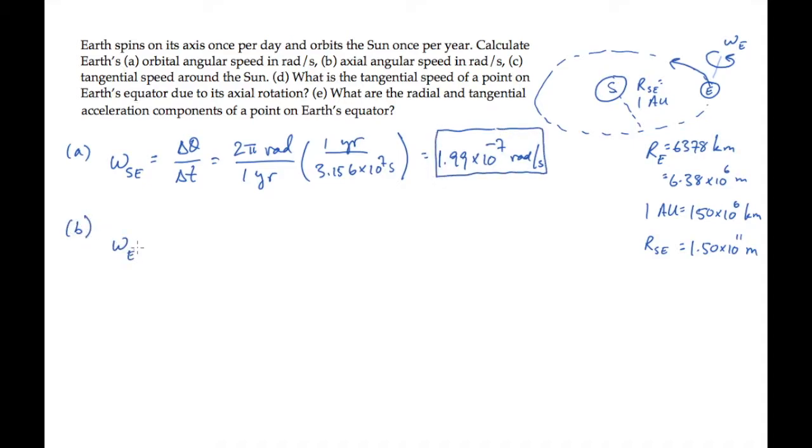Part B asks for the angular speed due to the Earth's rotation around its own axis. There we have 2 pi radians, one complete revolution each day. A day is 86,400 seconds, so apply that unit conversion to find the Earth's angular speed about its own axis is 7.27 times 10 to the minus 5th radians per second.